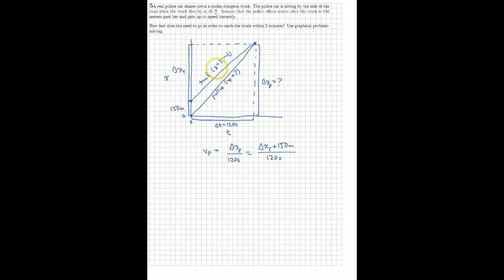Well, I do know the slope of this graph, and I know how long that goes. So I can figure out the delta X truck from that. I know the V truck is 35 meters per second, which is delta X of the truck over 120 seconds. So I can solve for the delta X of the truck: 35 meters per second times 120 seconds. So that's 4,200 meters.